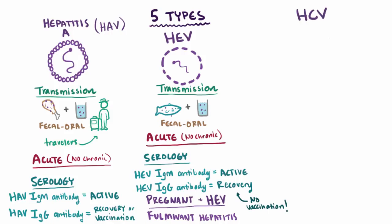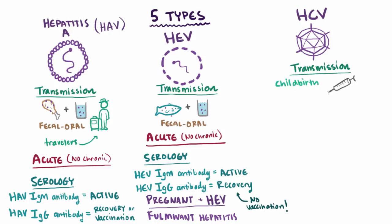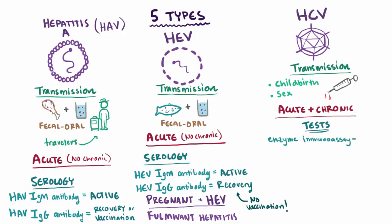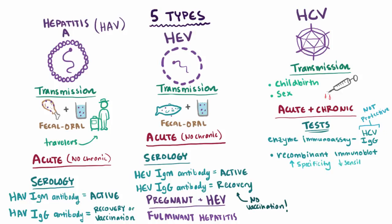Hepatitis C virus is transmitted via the blood — through childbirth, intravenous drug abuse, or unprotected sex. HCV usually does move on to chronic hepatitis. One diagnostic test is enzyme immunoassay, which screens for the HCV-IgG antibody. If present, it doesn't necessarily confirm acute, chronic, or even resolved infection, because it isn't regarded as a protective antibody like in HAV and HEV. A more specific test is recombinant immunoblot assay, which helps confirm HCV but is less sensitive than the immunoassay.